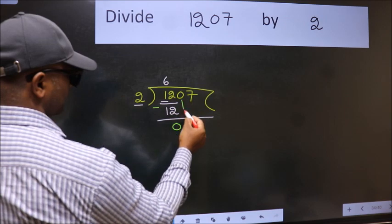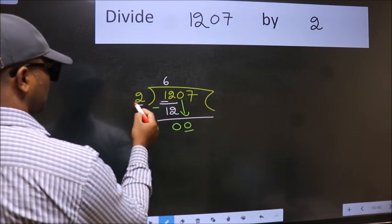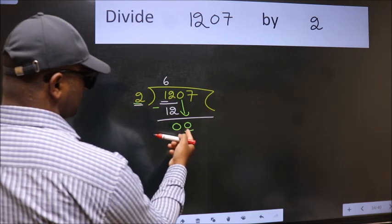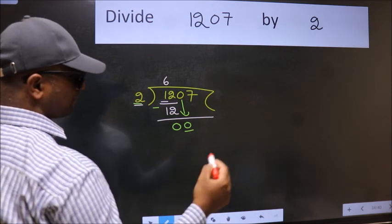After this, bring down the beside number. So 0 down. Now here we have 0 and here 2. 0 is smaller than 2, so we should bring down the second number.